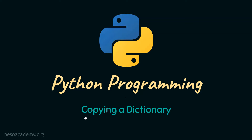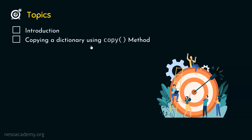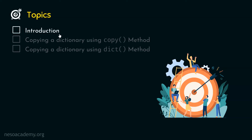In this presentation, we will understand how to copy a dictionary. The first topic is introduction to copying a dictionary. The second topic is copying a dictionary using the copy method. And the third topic is copying a dictionary using the dict method. Let's get started with the first topic: introduction to copying a dictionary.